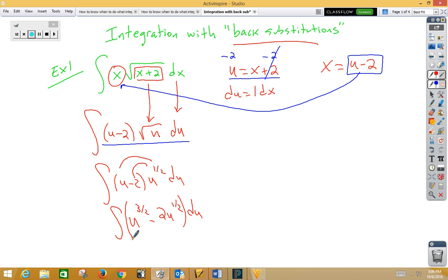Well, that's just a reverse power rule. When I integrate u to the 3 halves, I get u to the 5 halves times 2 fifths minus, I have a 2, I'm integrating u to the 1 half, which is 2 thirds u to the 3 halves plus c.